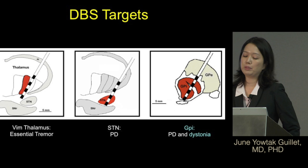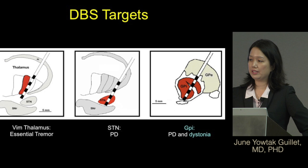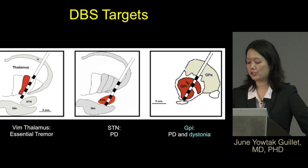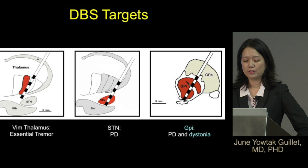The DBS targets can vary, but mostly for movement disorders they focus on aspects of the basal ganglia. In essential tremor patients, the VIM part of the thalamus is targeted. The subthalamic nucleus is targeted for Parkinson's disease, as well as the globus pallidus internus, or GPI. The globus pallidus is also used mostly to treat dystonia, and some studies show the subthalamic nucleus has been used for dystonia as well.